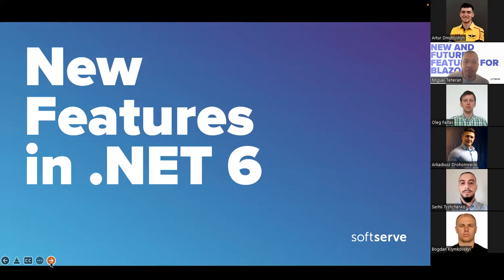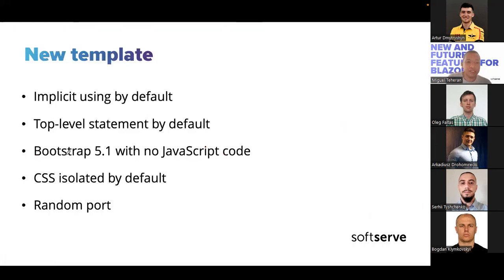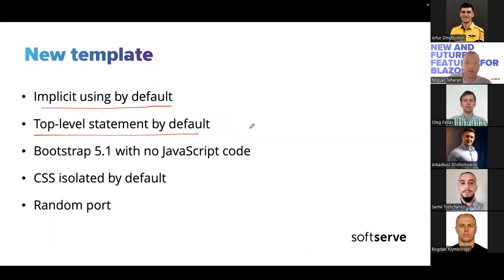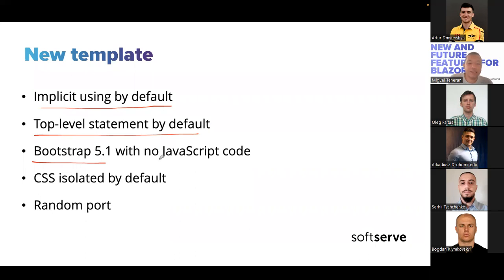Let's see new features in Blazor 6. The new template includes all new C# features: explicit usings by default — so we'll see less code — and top-level statements by default. These two features are related to C# and are implemented by default in the new Blazor template. We also have Bootstrap 5.1 included by default. This version doesn't need JavaScript — very important to highlight. That's the goal with Blazor: use less JavaScript. And Bootstrap 5 is faster.